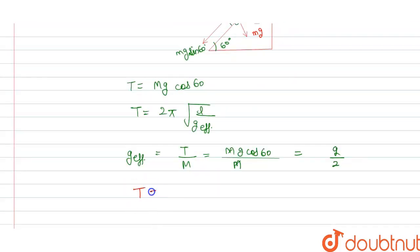If we put this in the time period T, we get T = 2π√(l/(g/2)), which becomes T = 2π√(2l/g).